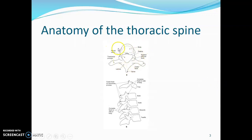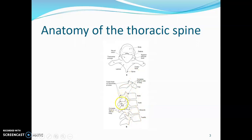This is the anatomy of the thoracic vertebra and it usually has a spine. The transverse processes contain costal facets for articulation of the ribs, and that's the neural canal where the spinal cord passes through. That's the vertebral body, and on the body you have superior articular facets and inferior articular facets. The superior facets are on the upper part and the inferior facets are on the lower portion. The spines are long and downward slanting and the body is usually heart-shaped.